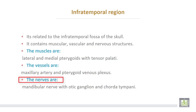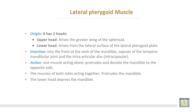The nerves are the mandibular nerve with otic ganglion and chorda tympani branch of the facial nerve. The lateral pterygoid muscle has two heads. The upper head arises from the greater wing of the sphenoid. The lower head arises from the lateral surface of the lateral pterygoid plate. Insertion of the lateral pterygoid muscle: first, into the front of the neck of the mandible; second, into the capsule of the temporomandibular joint; third, into the intra-articular disc of the temporomandibular joint.